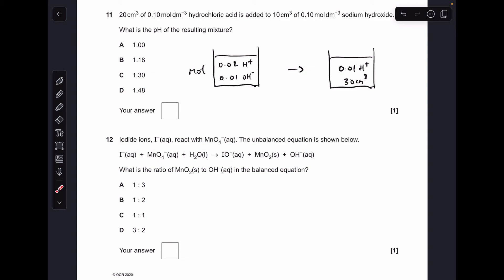And the total volume is the combined volume of the solutions, 10 and 20 cm³, 30 cm³. So now we need to turn that into an H+ concentration. That's just moles over volume, we get 0.03 recurring moles per decimeter cubed. And now we need to minus log that, which gives 1.48. So the answer was D.